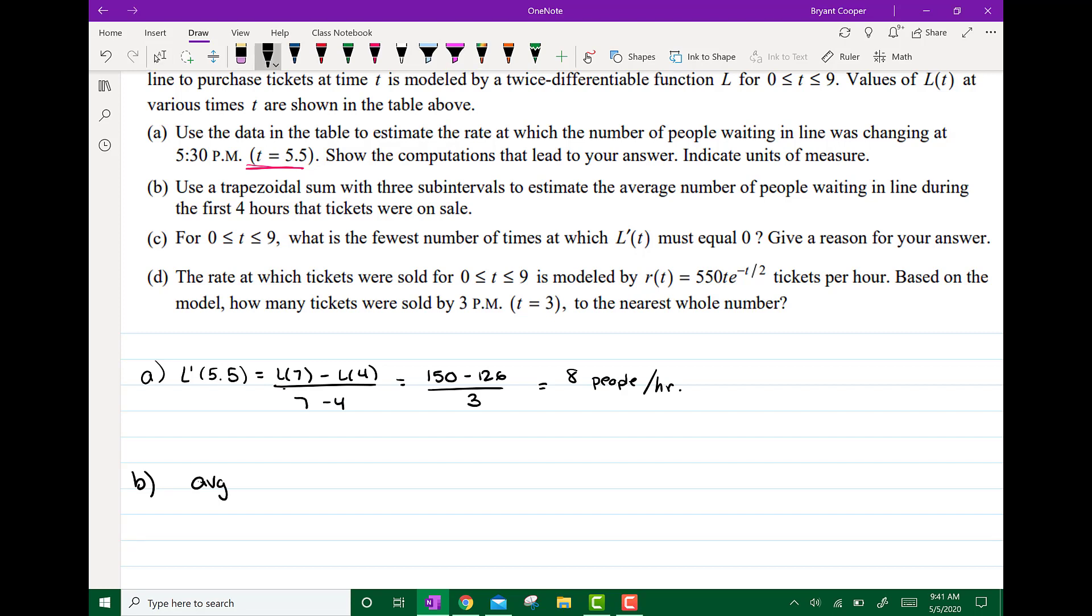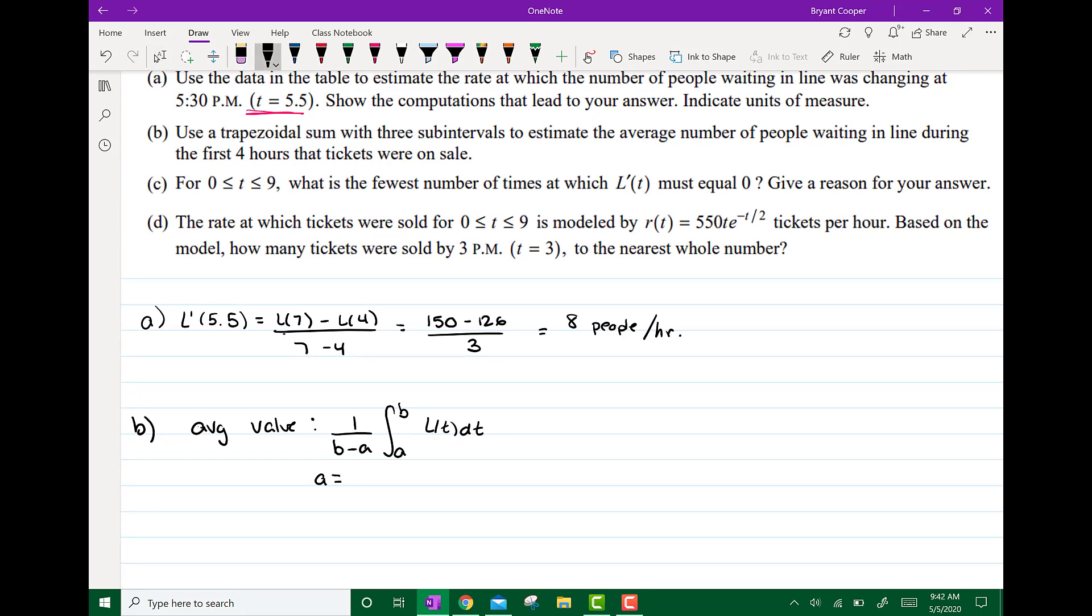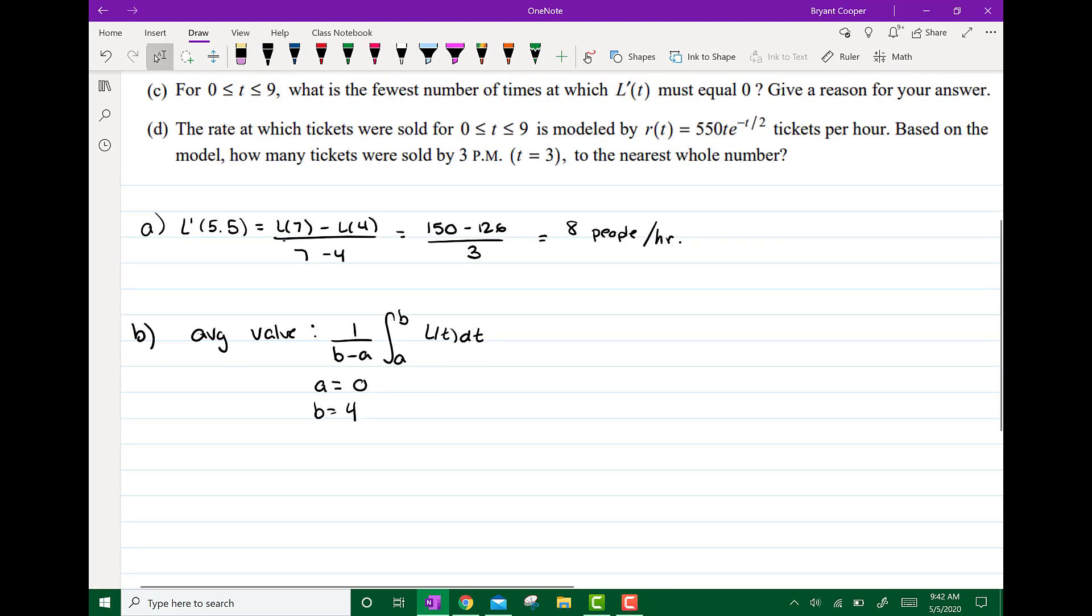So our average value formula is 1 over b minus a times the integral from a to b of L(t) dt. And in this case our a is going to be 0 and our b is going to be 4. So it becomes 1 fourth times the integral from 0 to 4 of L(t) dt.